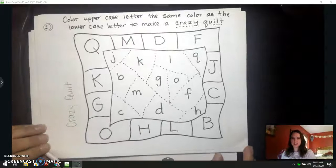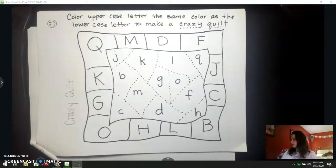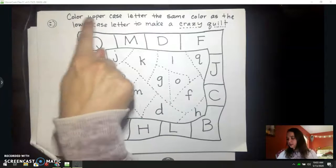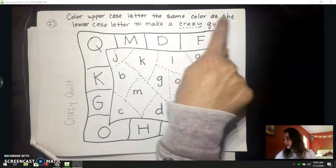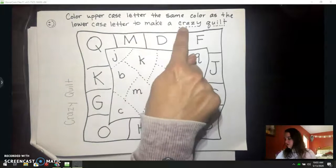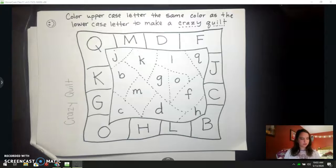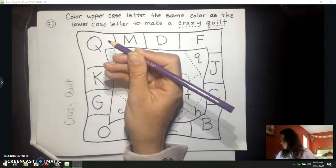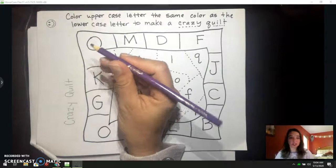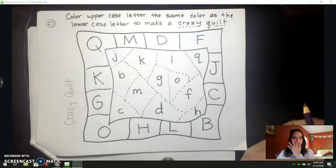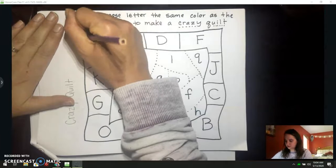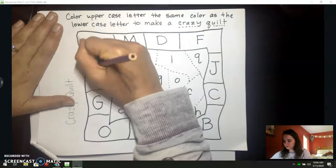This is our crazy quilt. And you're going to need a lot of colors for this one. The directions at the top say, color uppercase letter the same color as the lowercase letter to make a crazy quilt. And quilt starts with the letter Q. Qu-qu-quilt. So, I'm getting my colors out. I'm going to pick one color to start with. It is this beautiful purple color, called Orchid. And I am going to color my uppercase Q piece with it.